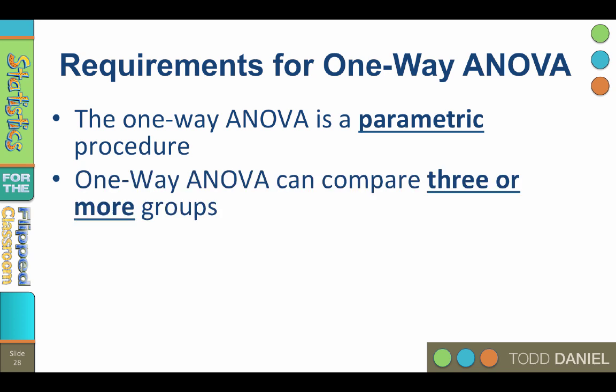A one-way ANOVA can compare three or more groups. Whenever your independent variable has three or more levels, use ANOVA, not a t-test.